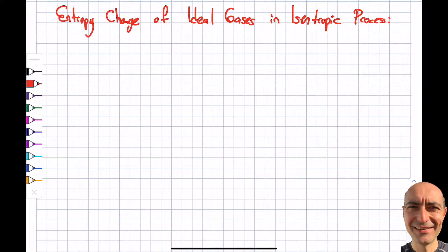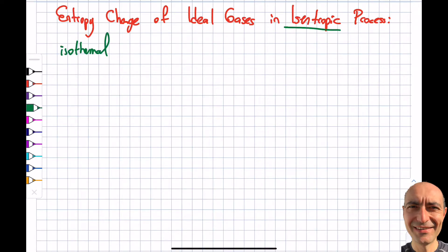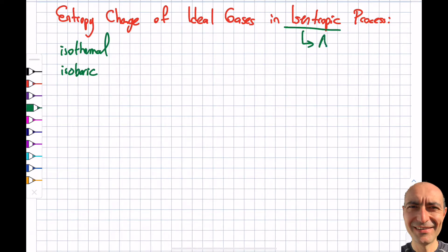Welcome to this segment on interpreting the change of an ideal gas in an isentropic process. We've discussed isothermal, isobaric, isochoric, and other polytropic processes. Isentropic is another such process, and it means that delta S equals zero — the entropy doesn't change.